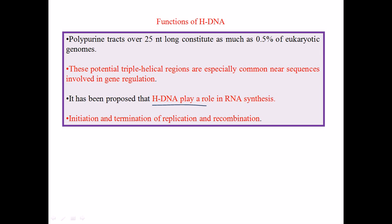H-DNA has been observed largely at sequences involved in gene regulation, most importantly in eukaryotic cells. H-DNA can also be found at initiation and termination points of replication, and it has also been found in recombination.